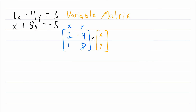If we multiplied our coefficient matrix by our variable matrix, notice that we would get 2x minus 4y in the first row, which represents the first equation. And then in the second row, if we multiplied these matrices together, we would have x plus 8y, which represents the second equation. So these work together very nicely.